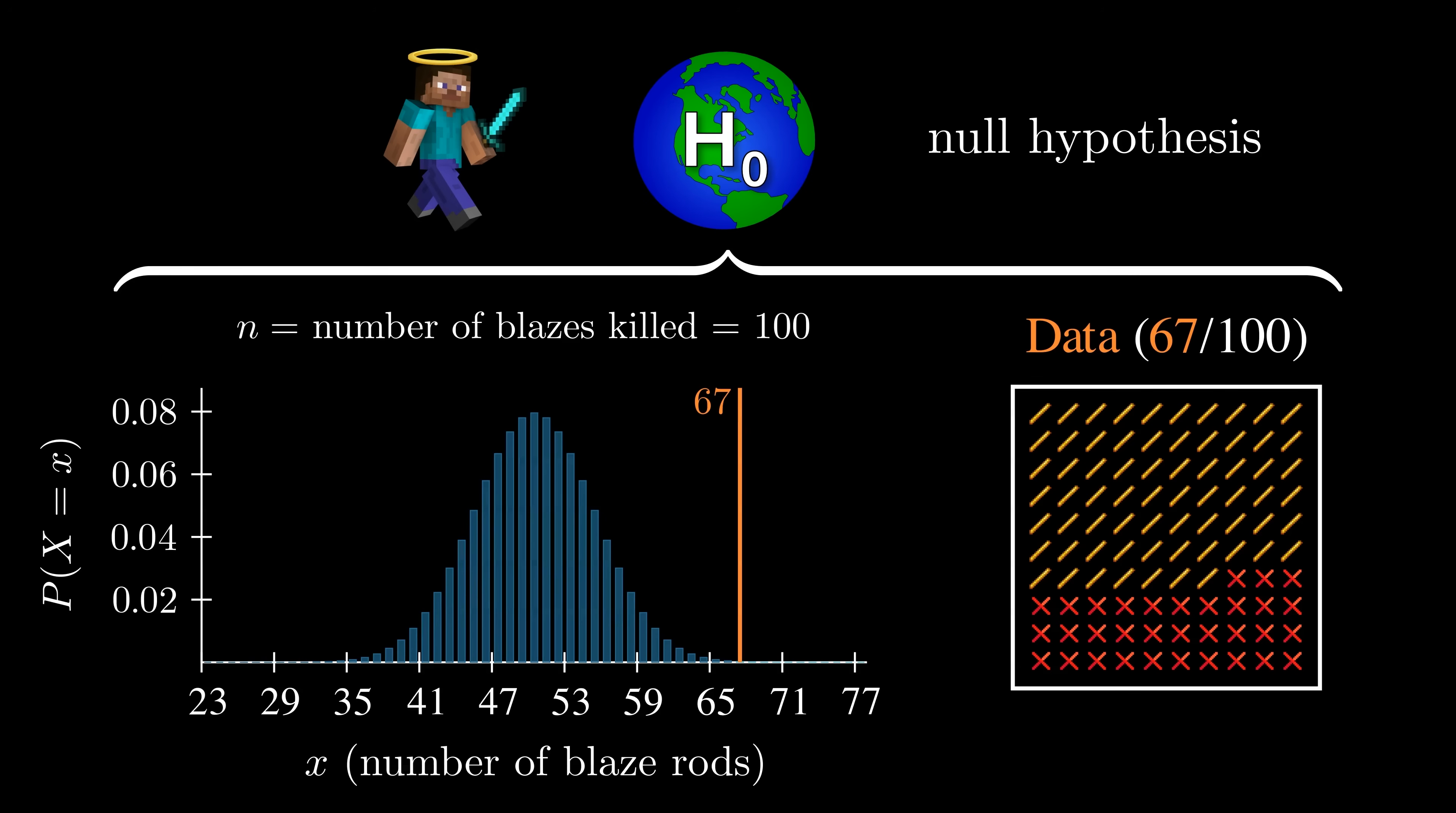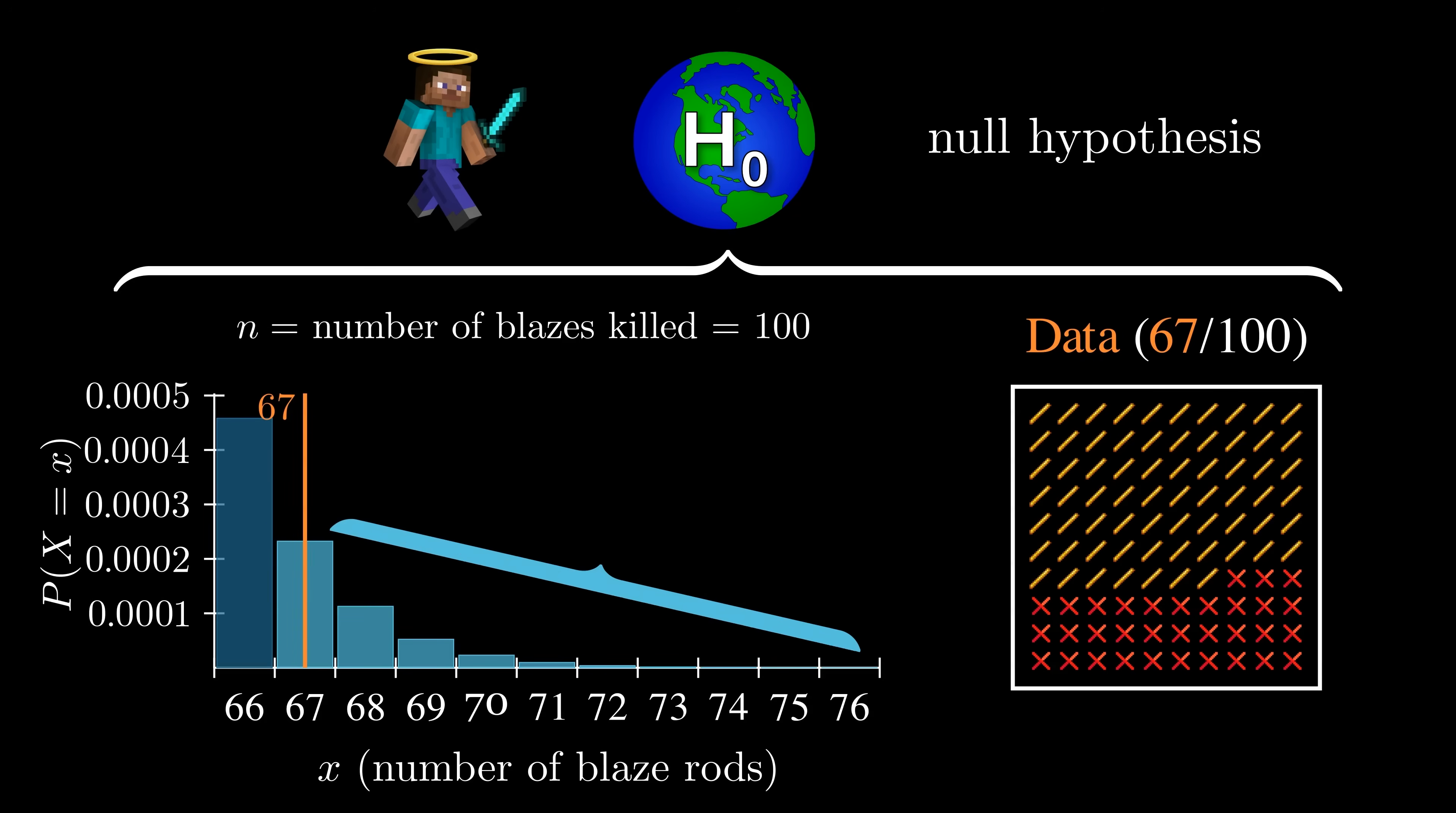we just add up the probability of seeing all x values from 67 to 100, which corresponds to this region of tiny rectangles to the right of the plot. Let's zoom in on this region to better see what it looks like. Adding up all of the probabilities in this region gives us 0.0004, or about 1 in 2500, our p-value.